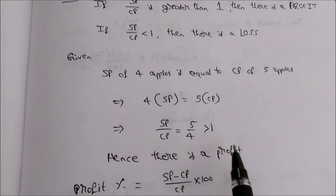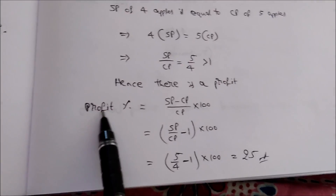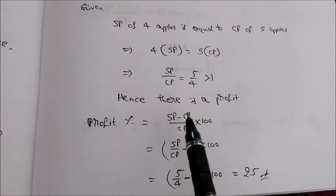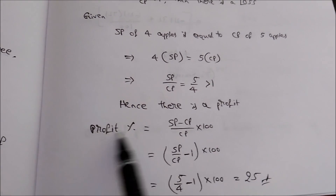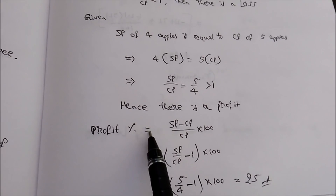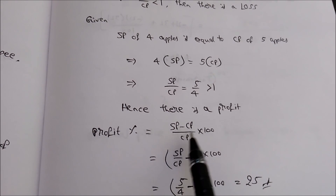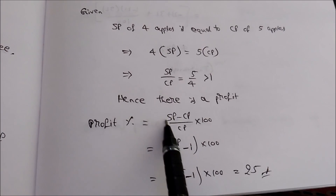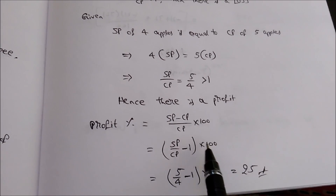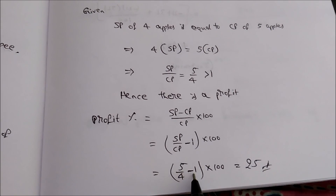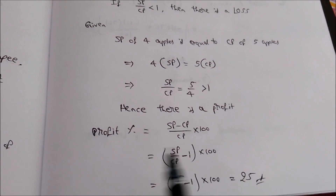Now we need to find the profit percent. Profit percent = (selling price − cost price) / cost price × 100. This simplifies to (SP/CP − 1) × 100, which equals (5/4 − 1) × 100 = 1/4 × 100 = 25.